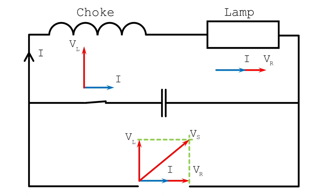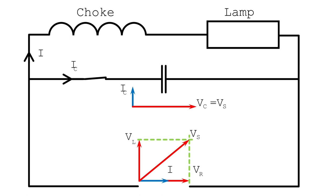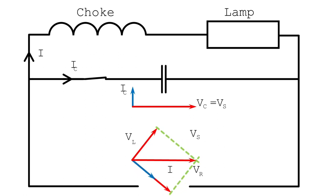Now what that means is that if we compare the phasor diagram for the capacitor to the phasor diagram we created for the resistive and inductive part of the circuit, we actually need to modify our original phasor diagram a little bit. That's because now we're considering the voltage and current inside the capacitor, connected in parallel, so we're no longer going to use the current as the reference phasor - we're now going to use the voltage as the reference phasor. You can see the diagram has been rotated so that the supply voltage is our reference phasor.